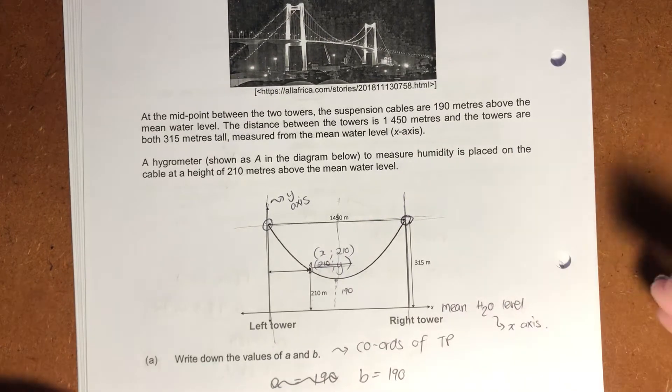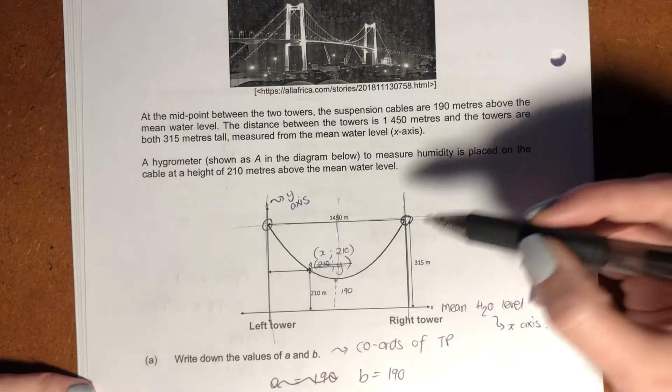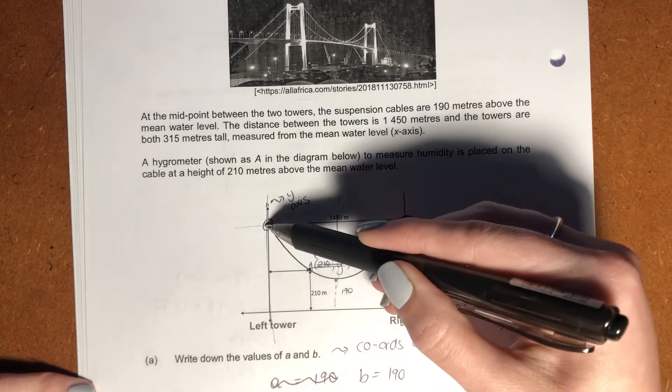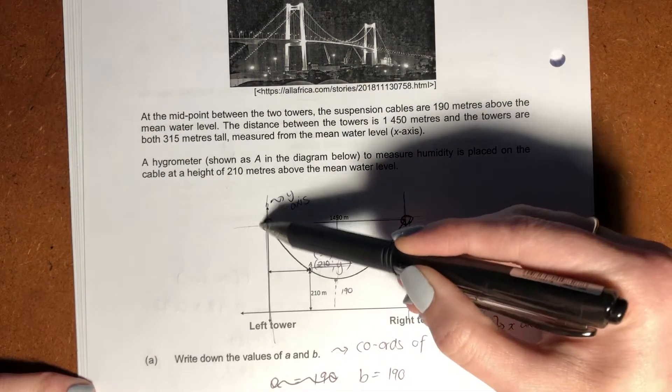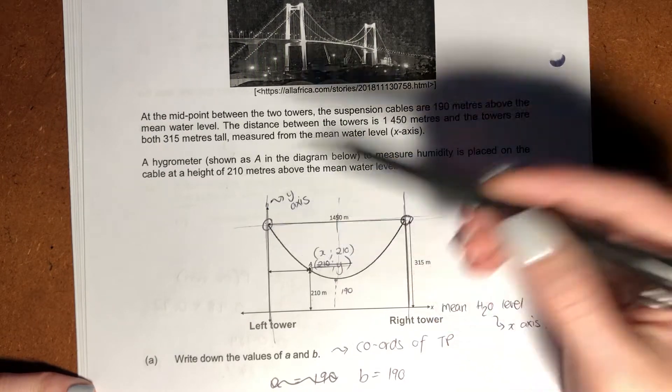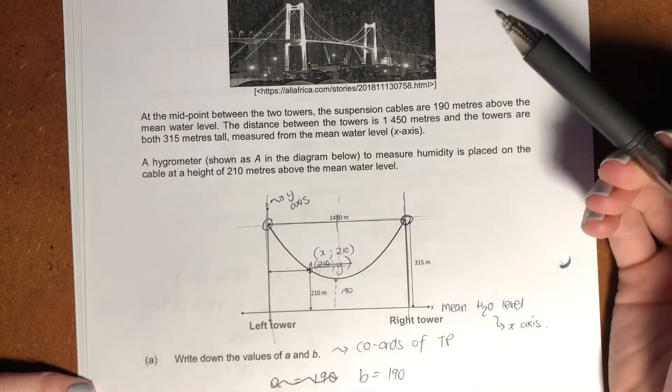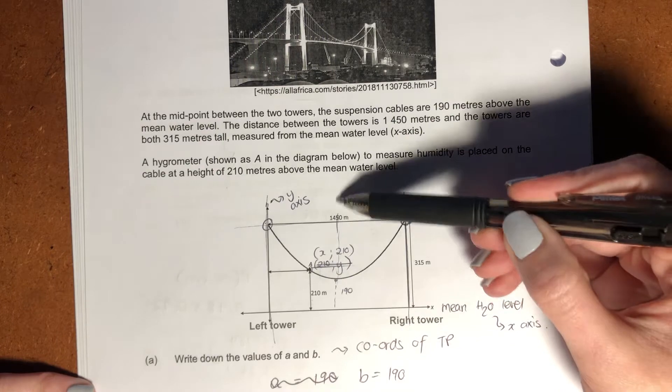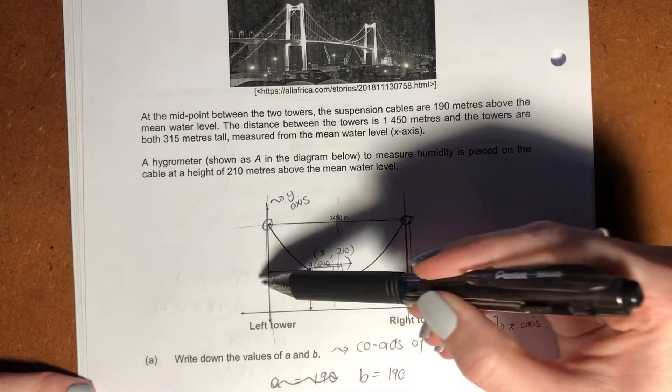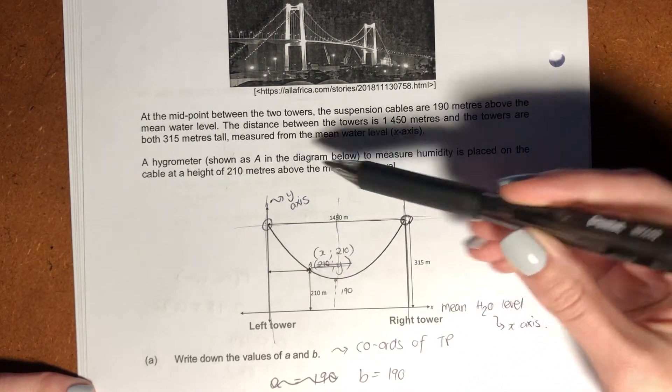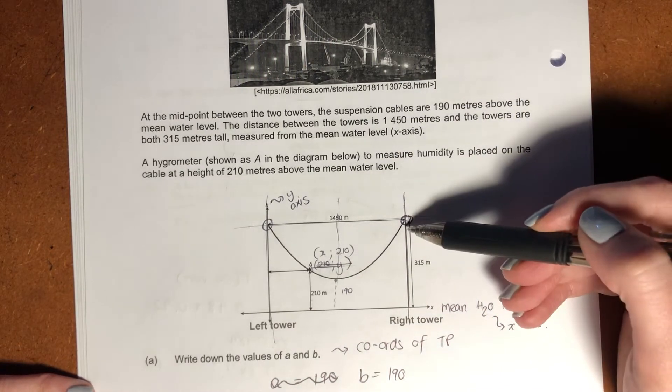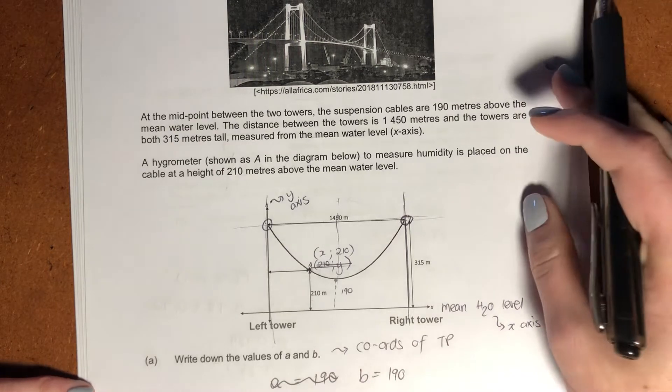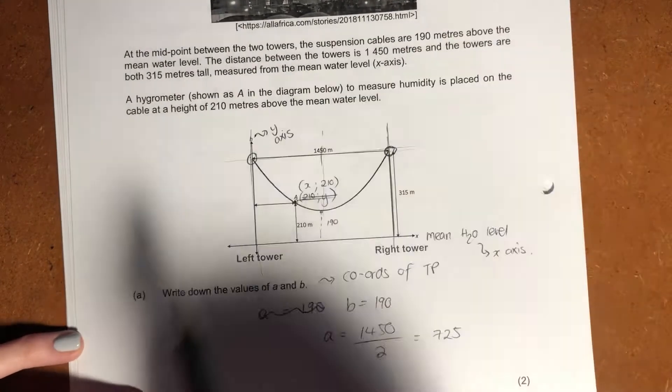Okay, so basically you have a parabola. They've drawn it for us here. These are its two, this is where it sort of starts and ends, right? So here would be your y intercept effectively, which we can call our h intercept because we don't actually use y. Then here is our turning point, right? Here is just a point, right, where the hygrometer is. We don't know what the x value is, but we do know it's 210 meters high, and we know that each of the towers is 315 meters.